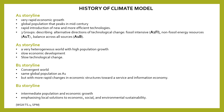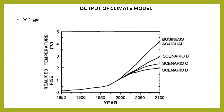More recent scenarios include A1, B1, and B2 — different assumptions about human activities contributing to GHG projections. The output of climate models shows the realized temperature rise. Using scenarios A (business as usual), B, C, and D, we can estimate temperature increase up to 2100. These are the outputs of climate models.